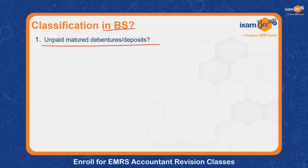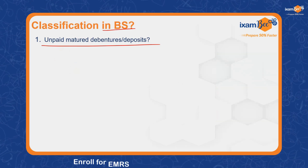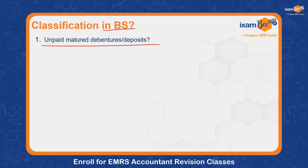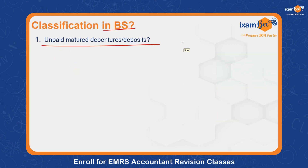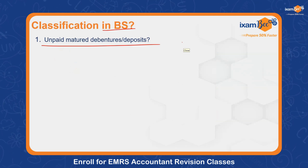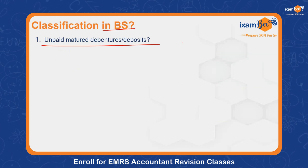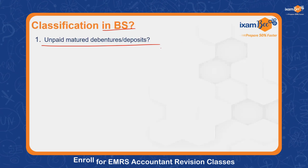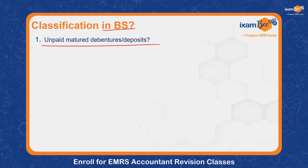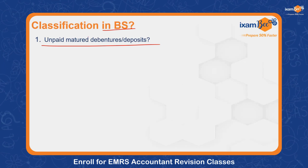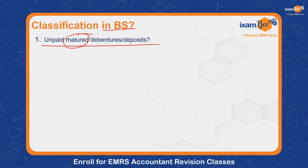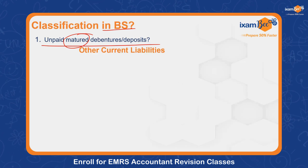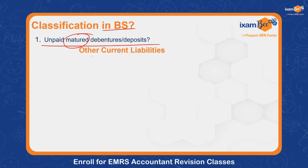Unpaid matured debentures — liability, correct. And where to classify further? Current liabilities. Other current liabilities. Why current? Because they are matured — although originally long-term, they are now matured so they must be repaid immediately. So: other current liabilities.